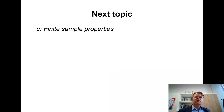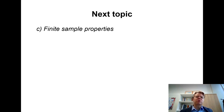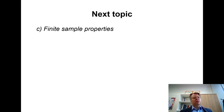In the next video lesson I will go to the finite sample properties of unbiasedness and efficiency, and we will utilize some of those assumptions to prove unbiasedness in particular. See you in the next lesson.